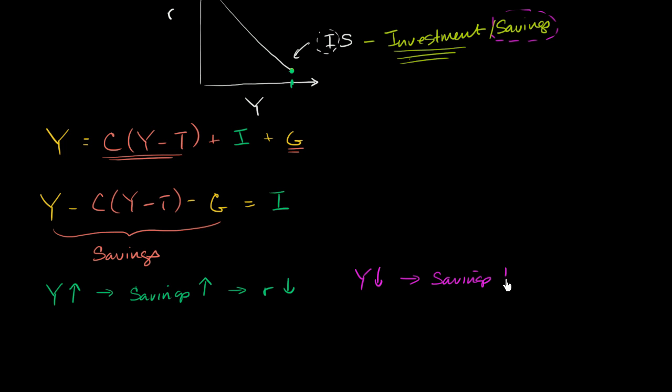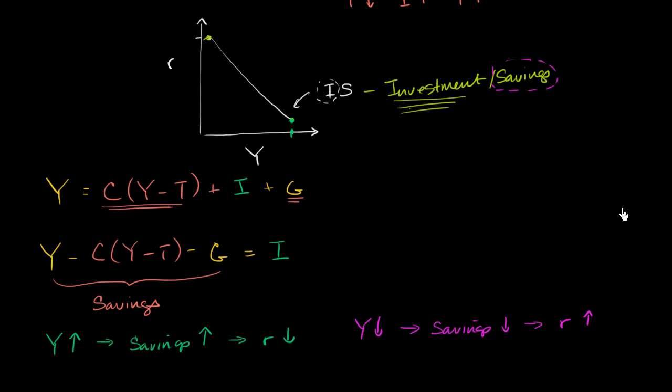So in this situation, savings are going to go down. And if you have fewer loanable funds, there's less savings to lend out, then if you have less of a supply of something, what's going to happen to its price? Its price is going to go up. The price of borrowing money is the interest rate. So in this situation, interest rates would go up. That's going in this direction right over here. If aggregate income goes down, loanable funds go down, interest rates are going to be higher.